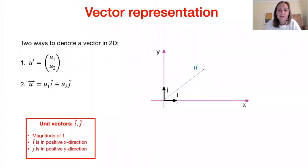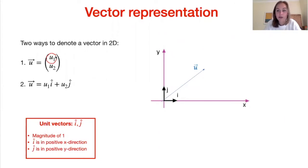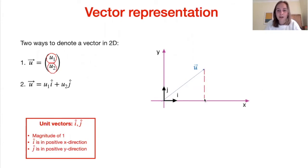First of all, vector representation. We're going to look at the key ways in which we denote a vector in two dimensions. The first way is using our matrix representation, where the top component denotes our x or horizontal component of our vector, and the bottom component relates to our vertical or y component. So if we look at the vector u drawn in this diagram, we can split it up into its horizontal component with magnitude u1 and its vertical component with magnitude u2.